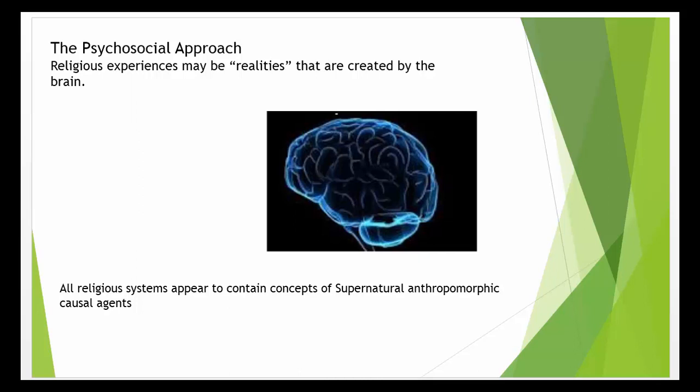All religious systems appear to contain concepts of supernatural anthropomorphic causal agents. One explanation for this is the concept of theory of mind — the idea that people know or think they know what is going on in other people's minds. The human brain extends this into the minds of other living and nonliving entities.